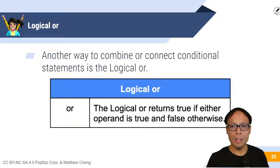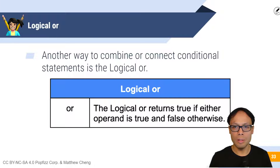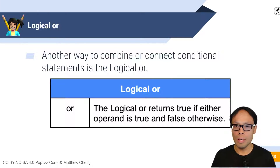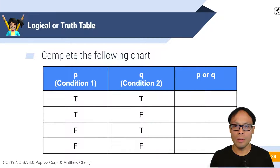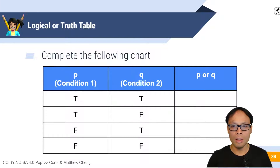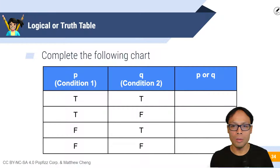Another way to combine or connect conditional statements is using the logical OR. The logical OR returns true if either operand is true, and false otherwise. So let's go ahead and complete our truth table. Here p is our condition one and q is our condition two, and the rule is that if either p or q is true, then the entire expression will be true.